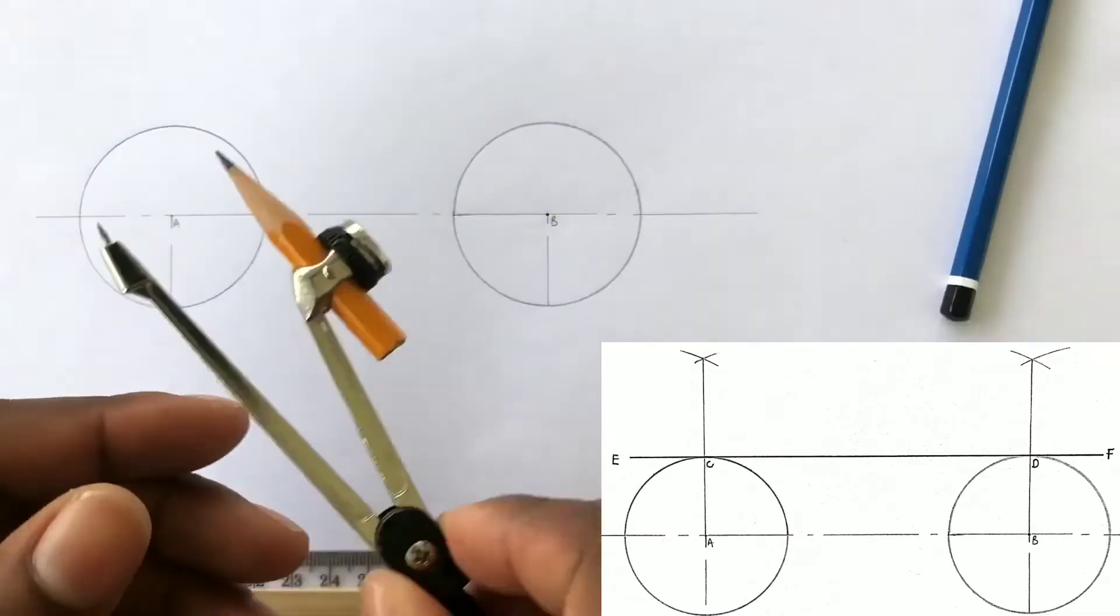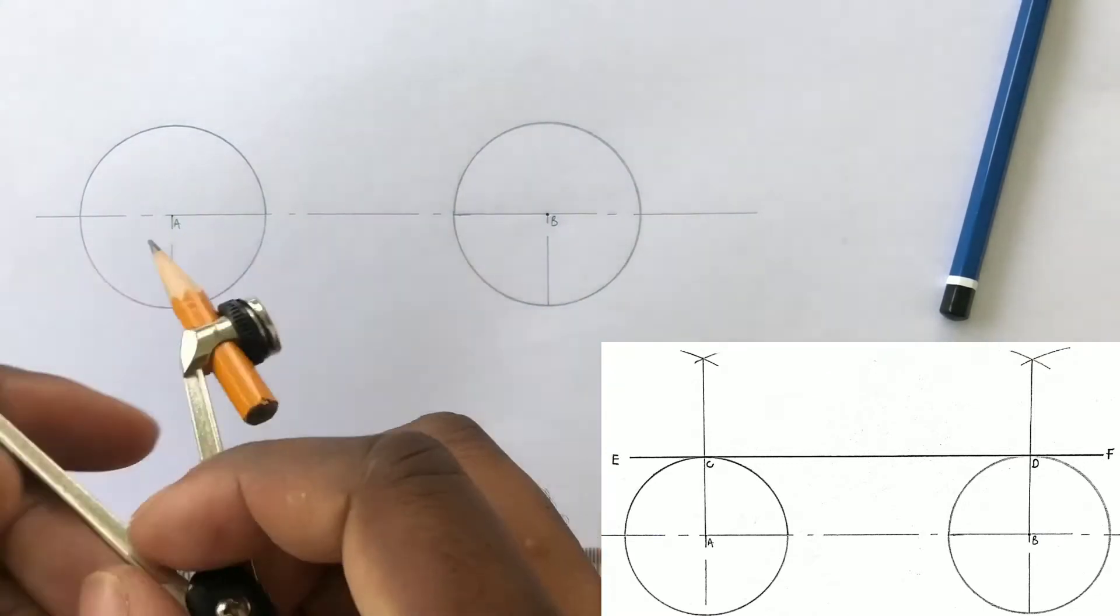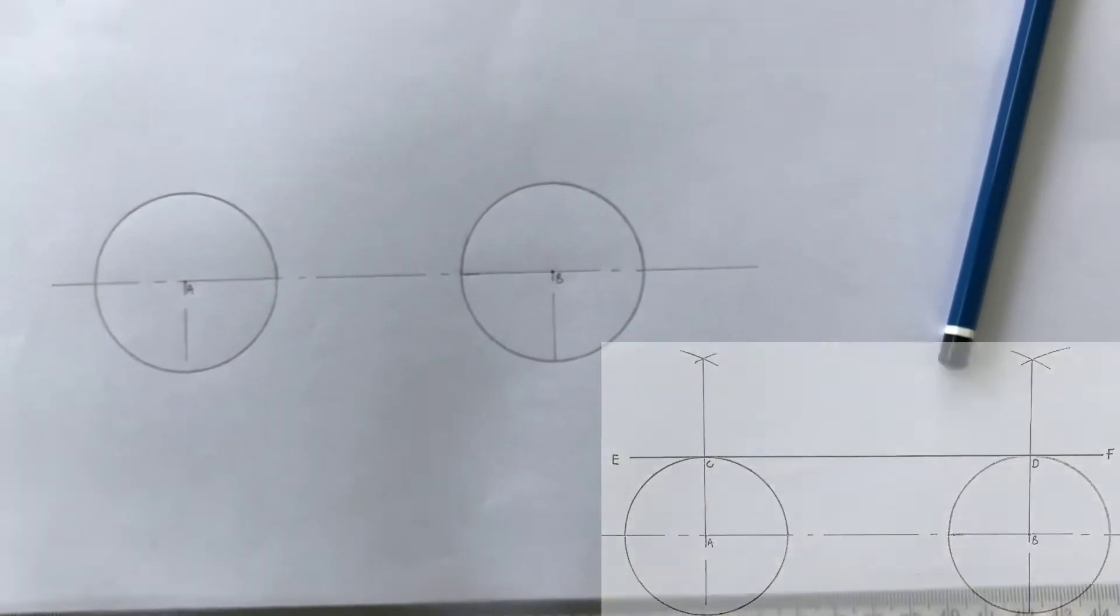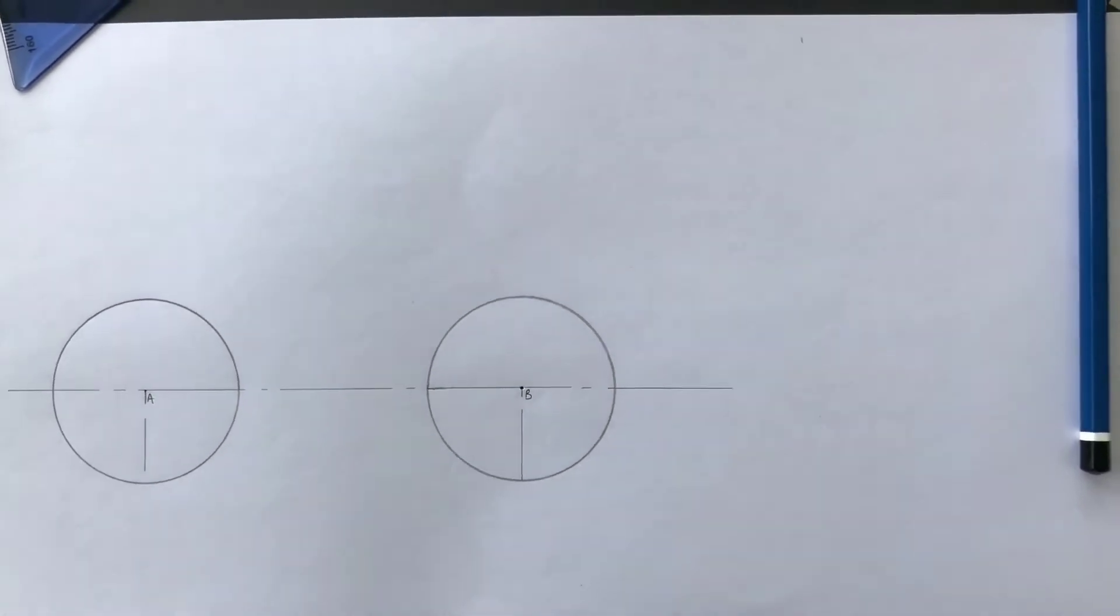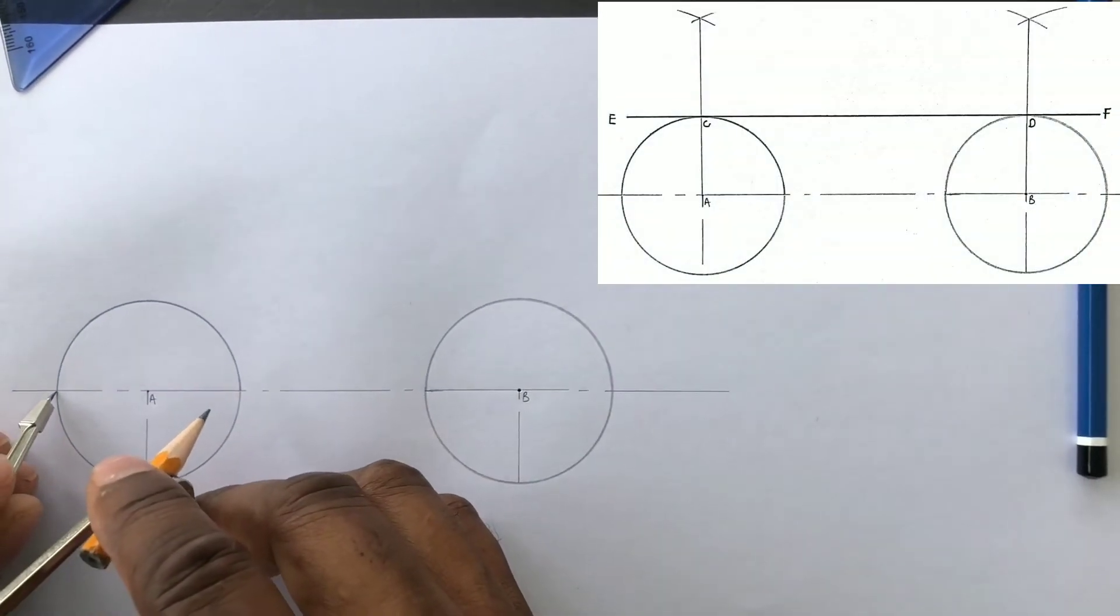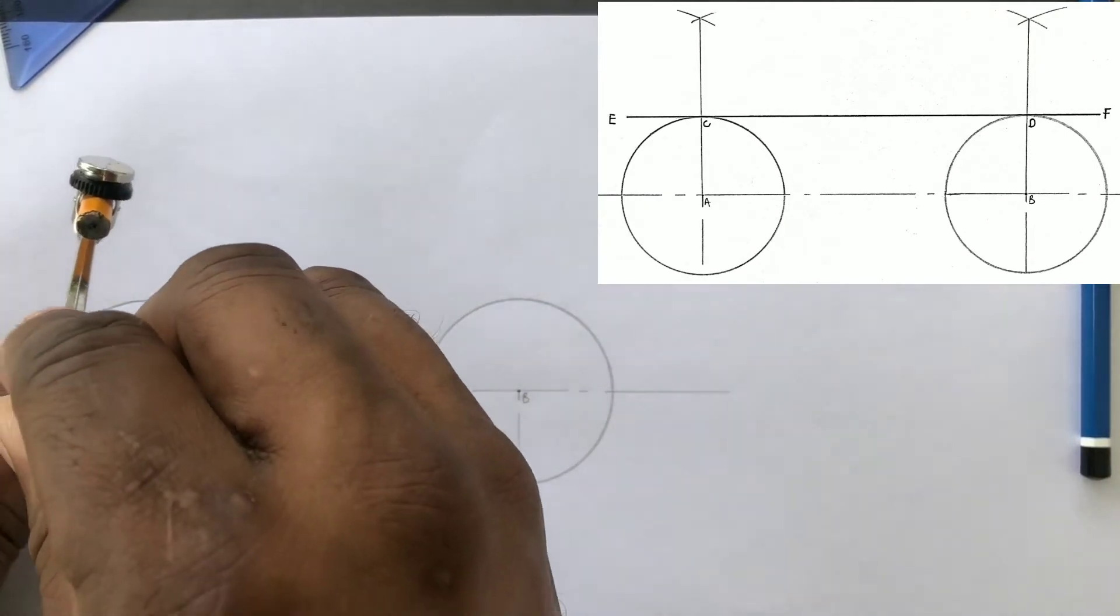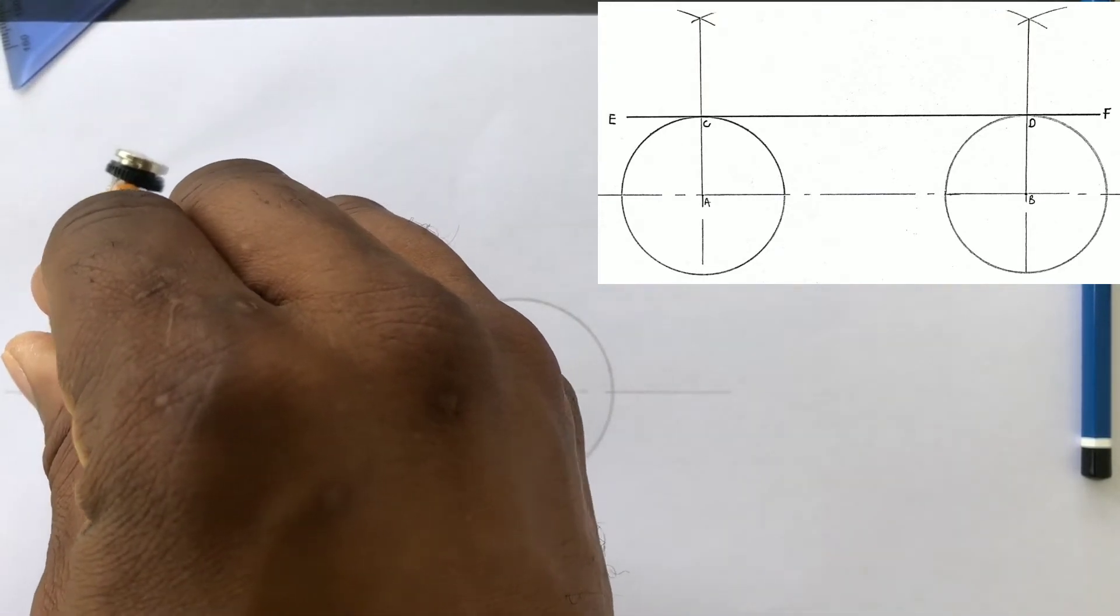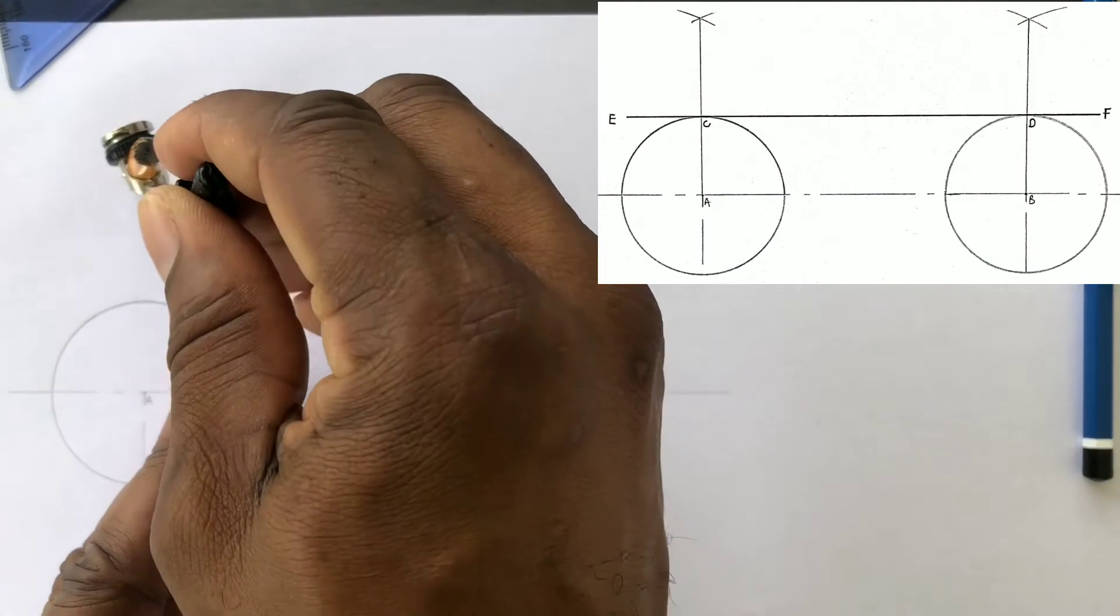Now we will open our compass just a little more. We will now be scribing arcs from the points where the circles intersected our center line. Open your compass just a little more and scribe arcs above the circles from both points where the circles intersected the center line.